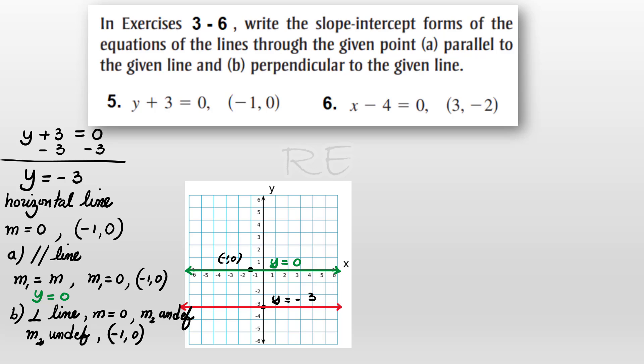And the vertical line that goes through negative 1, 0 is the line x equals negative 1. So the vertical line that we're looking for is x equals negative 1.